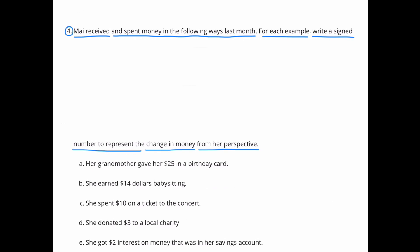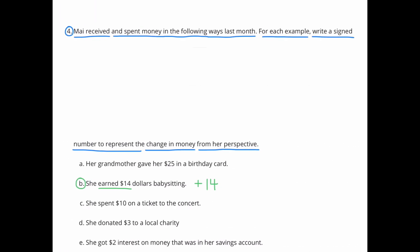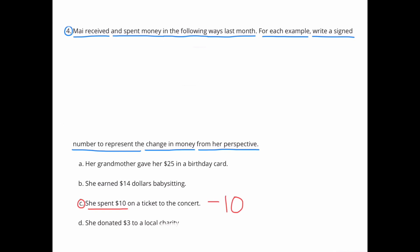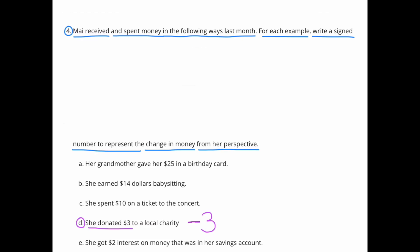Question 4: Mai received and spent money in the following ways last month. For each example, write a signed number to represent the change in money from her perspective. A: Her grandmother gave her $25 in a birthday card — positive 25. B: She earned $14 babysitting — positive 14. C: She spent $10 on a ticket to the concert — negative 10. D: She donated $3 to a local charity — negative 3.